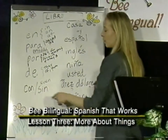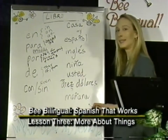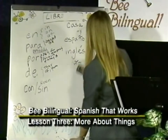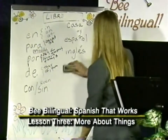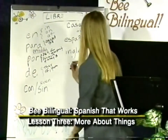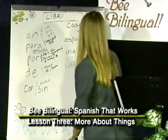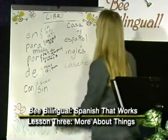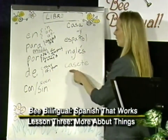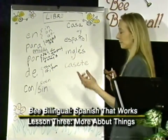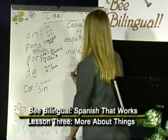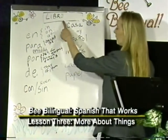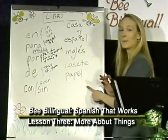With: 'con.' And 'sin': without. So let's say we had a book with a tape, with a cassette — 'libro con casete.' Or if we had a book without paper, it would be 'libro sin papel.'